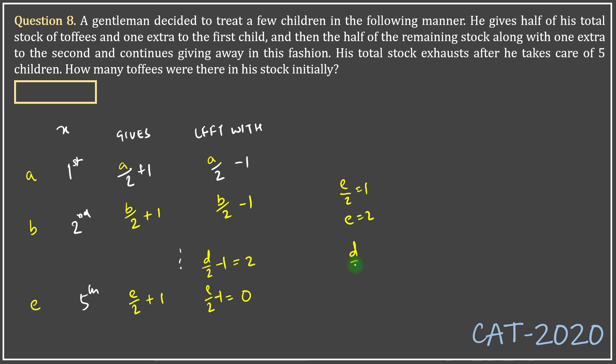Likewise, c/2 minus 1 is 6, that is c is equal to 14. Likewise, b/2 minus 1 is 14, that is b is equal to 30. And a/2 minus 1 is 30, that is a is equal to 62. That's the answer. Thank you.